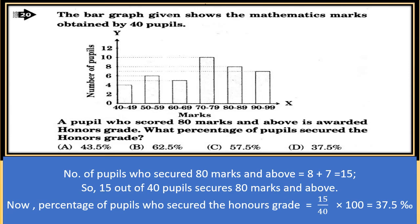The bar graph shows the mathematics marks obtained by 40 people. People who scored 80 marks and above are awarded the owner's grade. Number of people who secured 80 marks and above are shown by the last two bar graphs, which is 8 + 7 = 15. So, 15 out of 40 people secured 80 marks and above. Percentage = 15/40 × 100 = 37.5%.